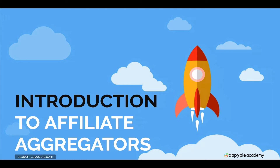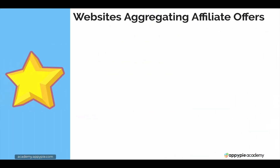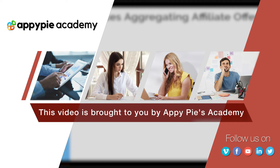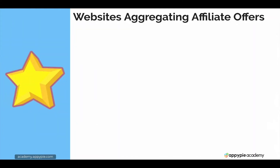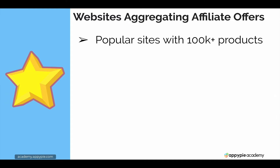With this video I want to introduce the next section of the course, which is going to focus on affiliate aggregator sites. These are basically websites that have many affiliate offers in them. We're going to talk about five different aggregator sites that together have over a hundred thousand — maybe over a million — different products, mostly because Amazon is one of them. We'll cover Amazon, which has physical products, and also digital products on sites like Clickbank and others.